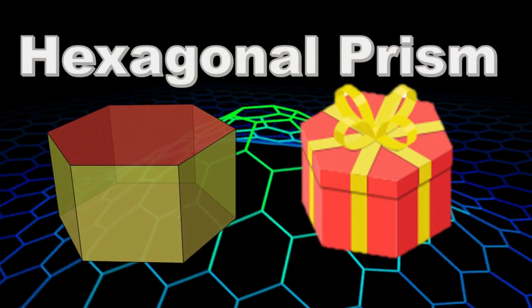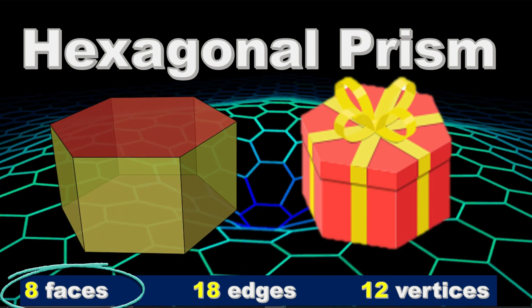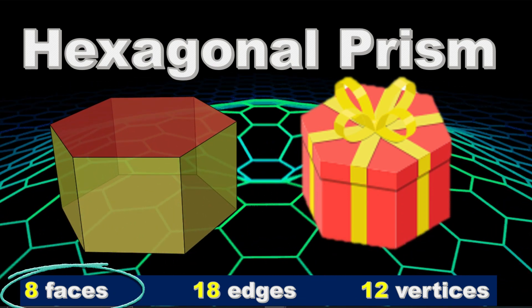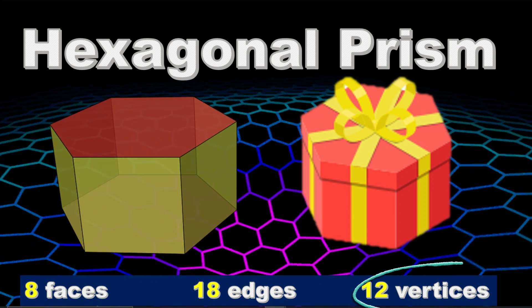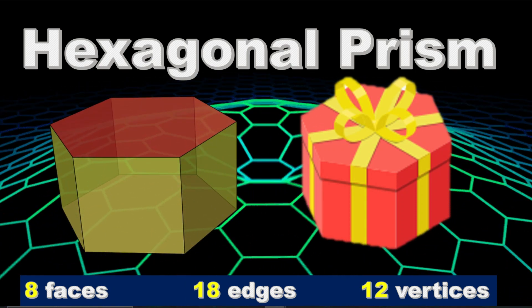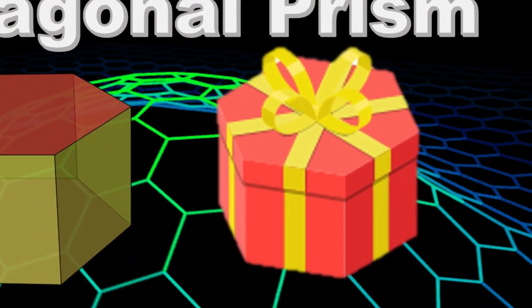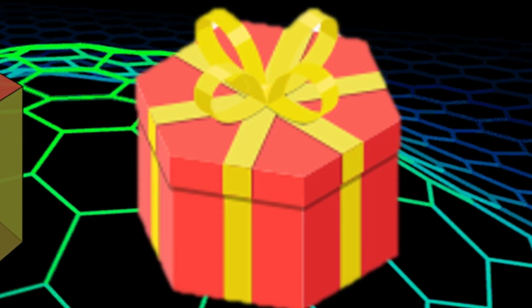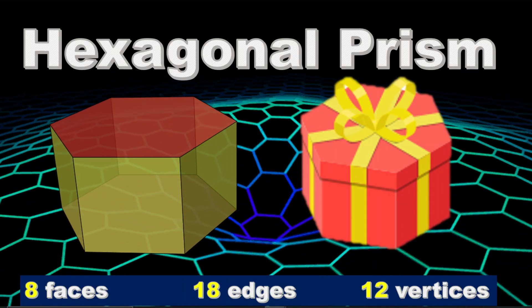Hexagonal Prism. Hexagonal Prism has eight faces, 18 edges, and 12 vertices. An example of Hexagonal Prism is this gift. This gift has eight faces, 18 edges, and 12 vertices. This is a hexagonal prism.